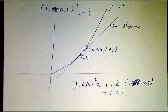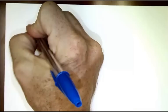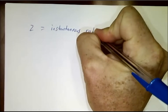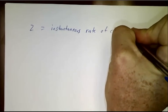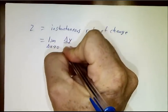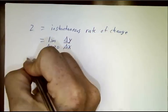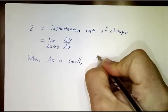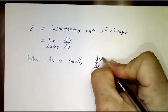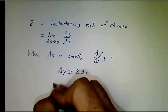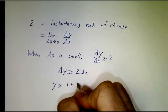Now, put it another way, we know that 2 is the instantaneous rate of change, and that's the limit as you take smaller and smaller changes of the change in the output. So when delta x is small, delta y over delta x is approximately 2. So delta y is approximately twice delta x. So y is approximately 1 plus 2 times (x-1).